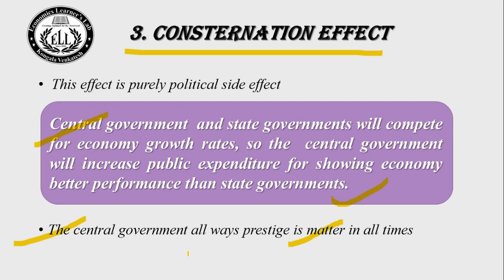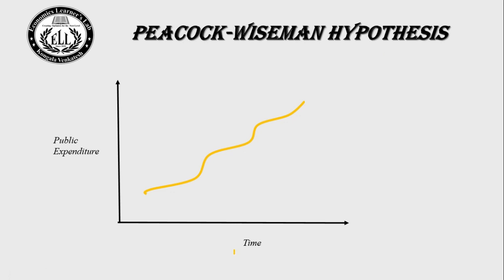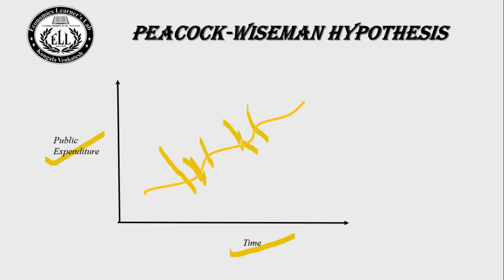Let us see the jerky steps diagrammatically. On the horizontal axis we have time, and on the vertical axis we have public expenditure. This is the public expenditure curve. When social disturbances come, the government increases public expenditure to cover them. Then for future social disturbances, there is again an increase in public expenditure. Like that, the government keeps increasing public expenditure, but we see some jerky steps in the curve. Hope you understand what is the Peacock-Weisman Hypothesis.